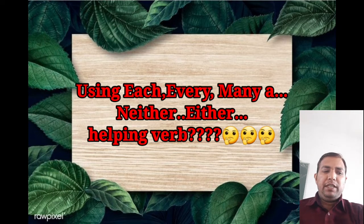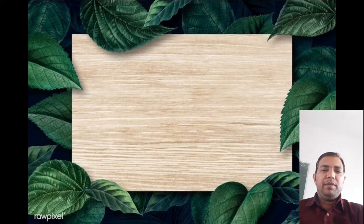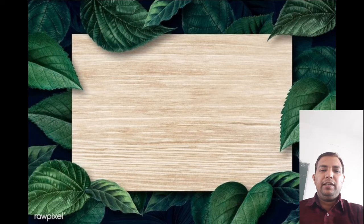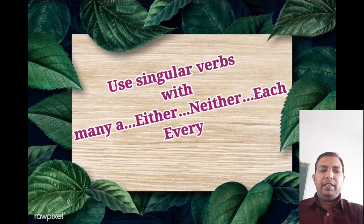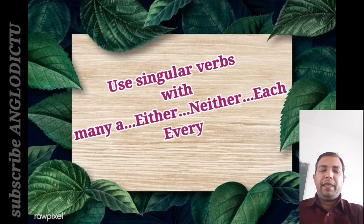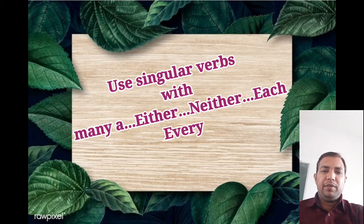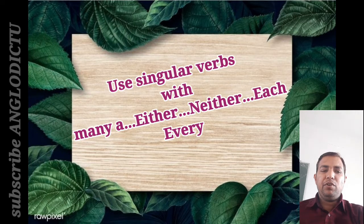Let me tell you today that this is Rule Number Six. When you start the sentence with either, neither, many a, every, or each, you must apply a singular verb. I repeat — singular verb: each, or was.